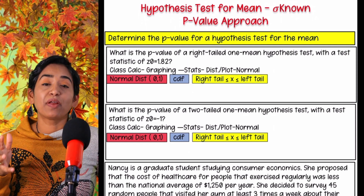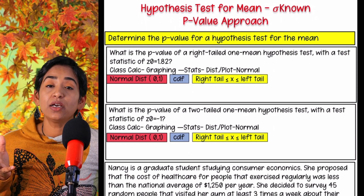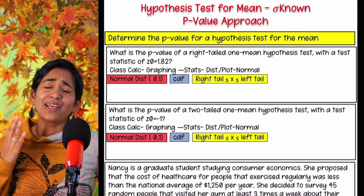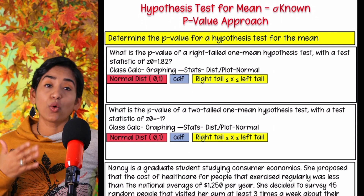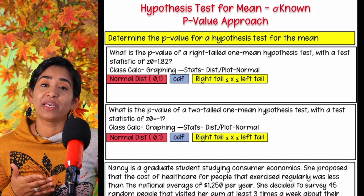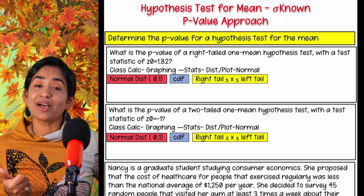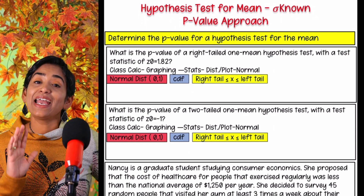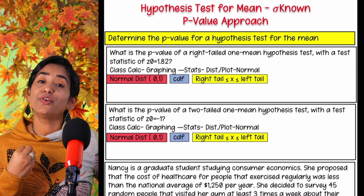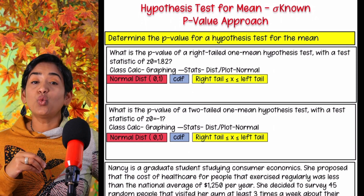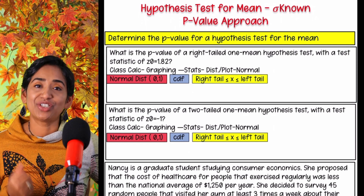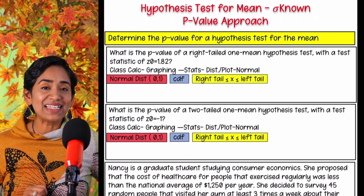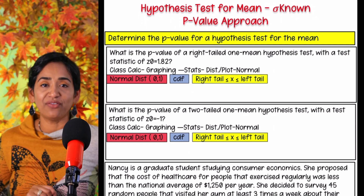Welcome back. This is about hypothesis tests for mean with standard deviation known. We will be using a p-value approach. I highly recommend going over your previous topics so you have an understanding of what H0 is, what a p-value is, what a rejection region is, when you reject your null hypothesis, when you fail to reject, and what verbiage to use when rejecting or failing to reject. Let's go ahead and take a look at how to find the p-value.